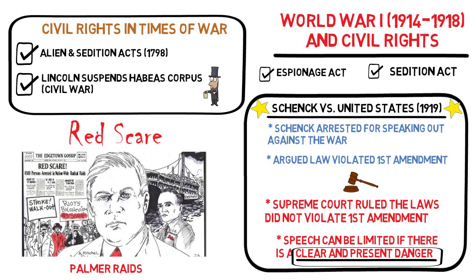The debate over whether the Palmer Raids violated civil rights by unfairly targeting those with unpopular political beliefs, or whether the Espionage and Sedition Acts were a violation of First Amendment protections of free speech, is one that Americans continue to have to this day. Some view them as irrational actions taken out of fear. Others view them as necessary steps for the protection of the country. Either way, these incidents highlight an often difficult-to-maintain balance in a democratic society — the balance of protecting people's rights while at the same time protecting the safety of the nation.